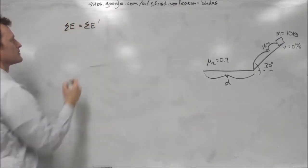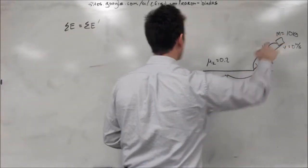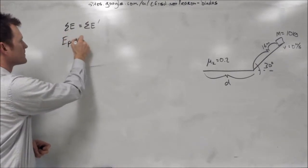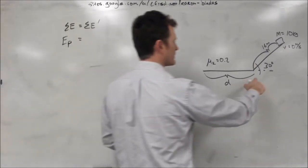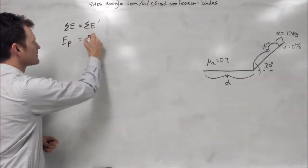Sum of all energy before equals sum of all energy after. Now we can see from where the box is positioned, and the fact that the velocity is zero, that only potential energy exists on the left side of the equation. And at the bottom, since it's even with the ground, only kinetic energy exists.